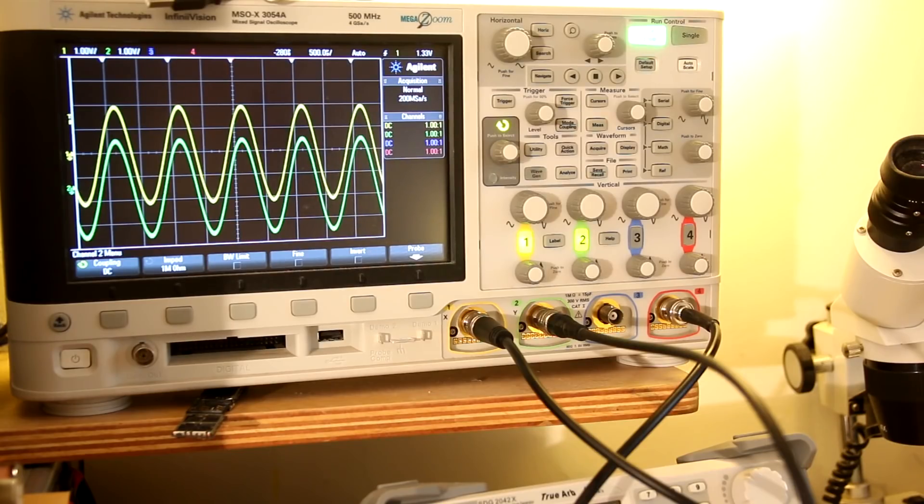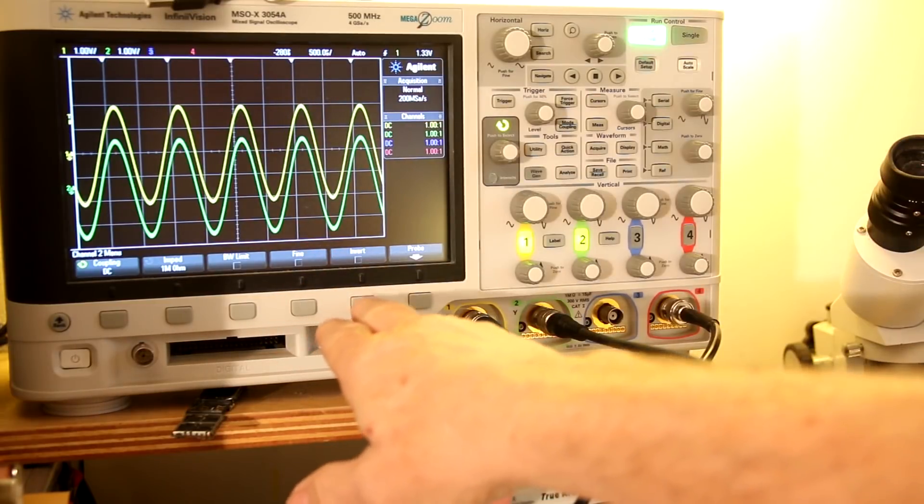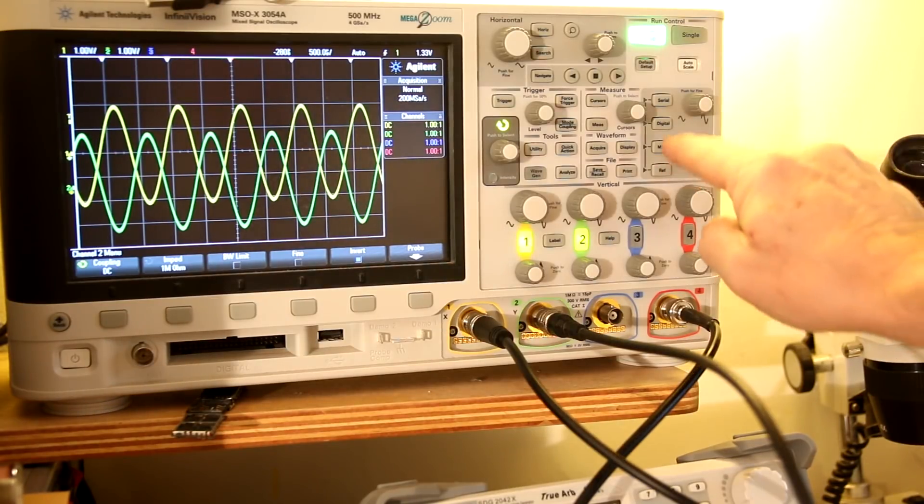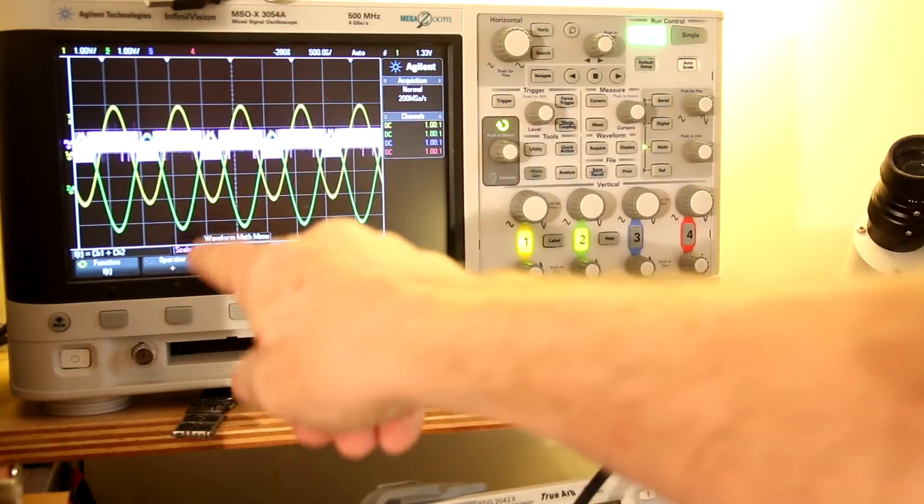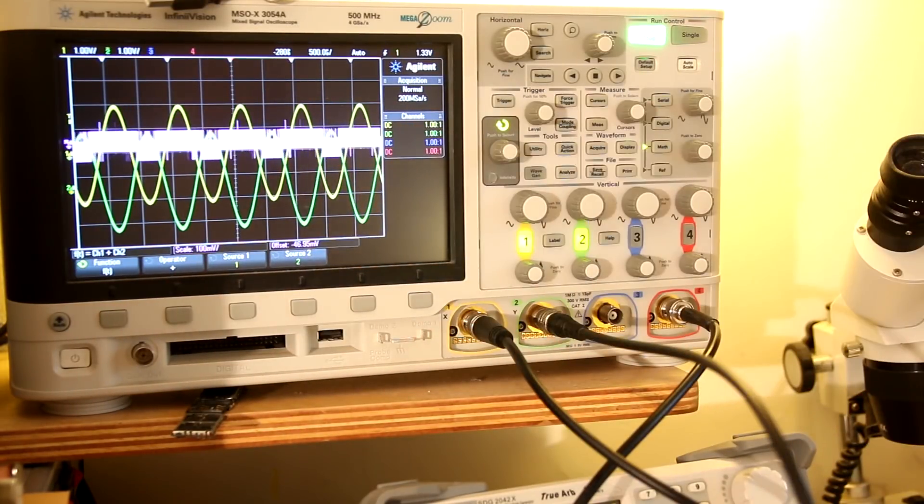Now I'll remove the preamp and feed both channels directly into the scope. Both channels from the waveform generator are going into channels 1 and 2 on the oscilloscope. Now I'll select channel 2 and invert that one. You can see the phase is now out by 180 degrees. I'll turn on the math function, set it to sum the two channels, and we get this very strange looking waveform.